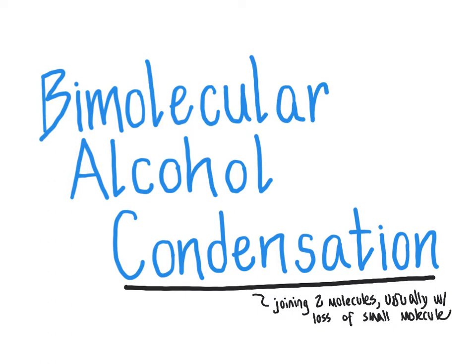So how do we apply bimolecular alcohol condensation to yield ether products? We set it up so that we have two identical alcohol molecules, which I will call ROH. We place those into an acidic environment, usually sulfuric acid H2SO4, but you may also see it written as H3O+ or H+ as a shorthand.